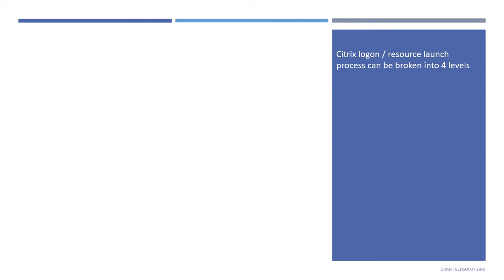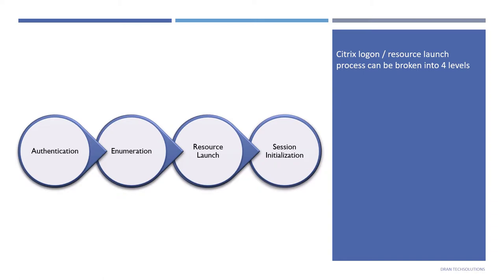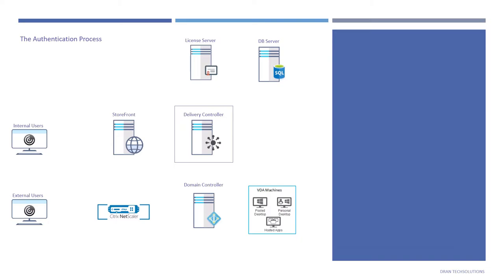The Citrix logon or resource launch process can be broken into four levels: authentication, enumeration, resource launch, and finally session initialization. I'm going to explain all four processes for both internal as well as external users.